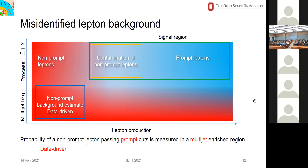The misidentified lepton background is a very important thing we need to get a handle on, so we use a data-driven method. We compute the probability of non-prompt leptons passing the prompt cuts, measured in a multi-jet QCD-enriched region of the data — a data sideband. We then apply this to an application region closer to our signal region but still expected to contain non-prompt leptons, so that we can do subtraction and get an estimate of what our actual signal region would contain.